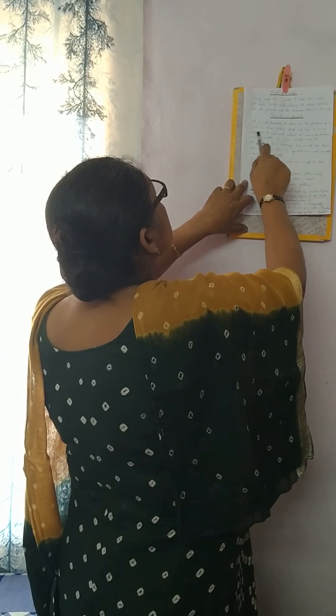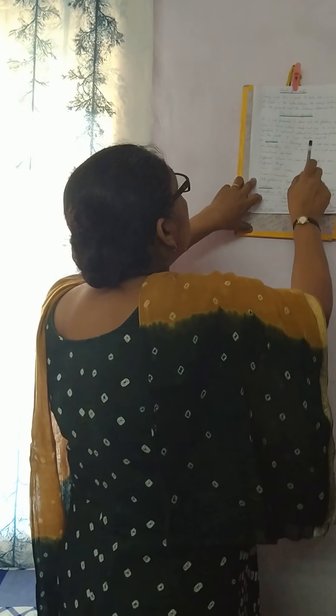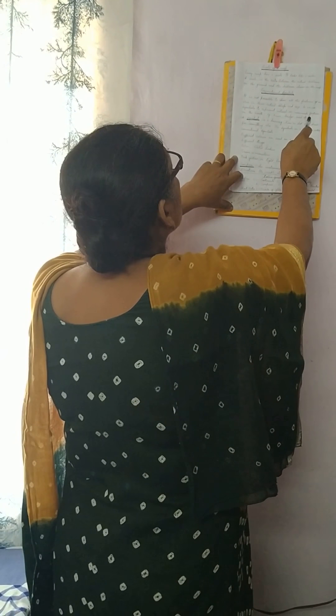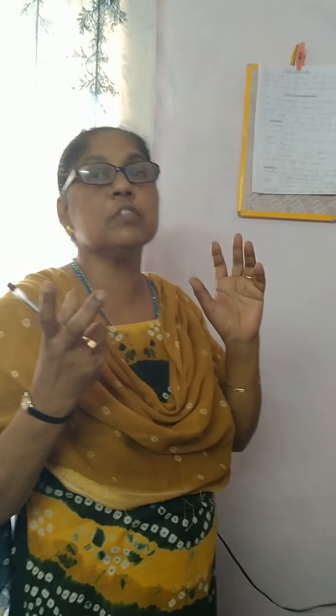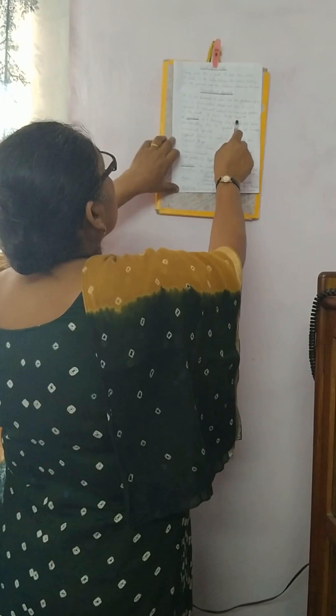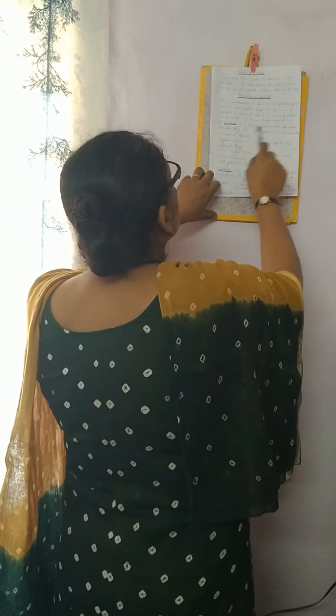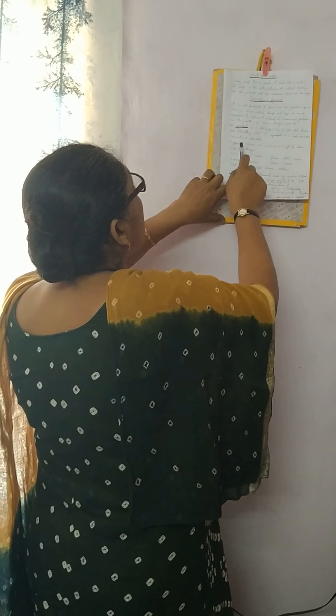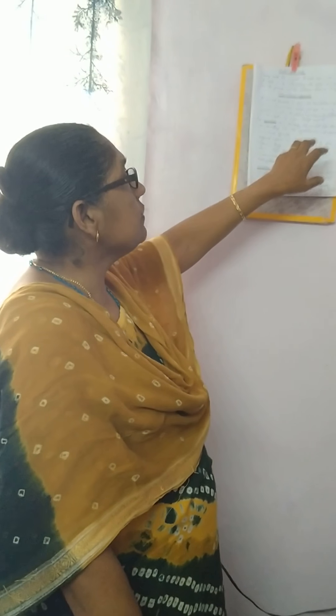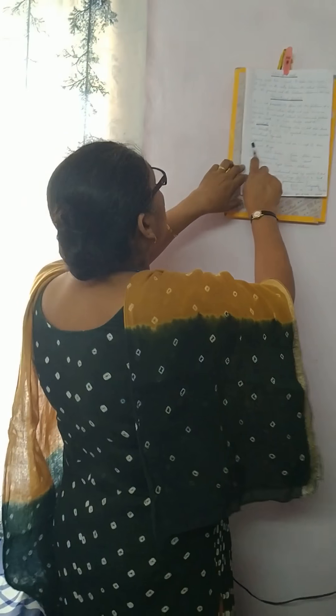It is not possible to show all the features of an area in their actual shape and size, so we use symbols to represent natural or man-made features on the earth. We use symbols for things like rivers, bridges, roads, etc. A symbol is a drawing, line, or dot that stands for something else. The symbols used on a map are called conventional symbols.